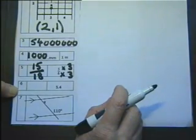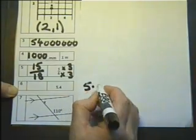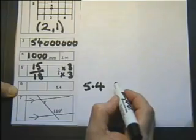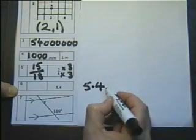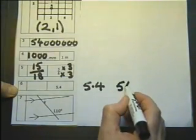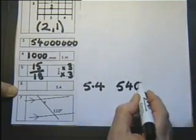Number 6: What is 5.4 multiplied by 100? So 5.4 multiplied by 100. When you multiply by 100, sometimes you say I'll stick two noughts on the end, but it's no good if there's a decimal point.